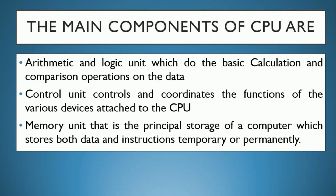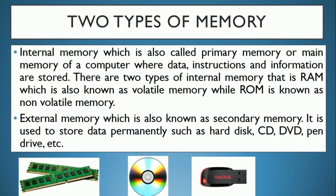The Memory Unit stores data both permanently and temporarily. There are two types of memory: internal memory and external memory. Internal memory is also known as primary or main memory. There are two types of internal memory — RAM and ROM. RAM is called volatile memory because whatever is stored is lost when the computer is switched off. ROM is called non-volatile memory because data is stored there permanently.